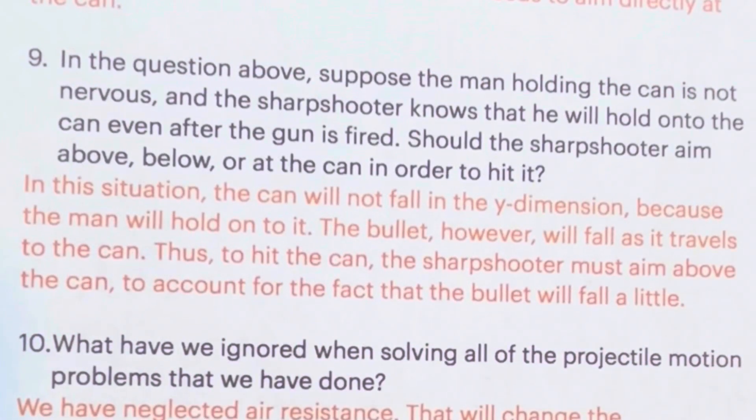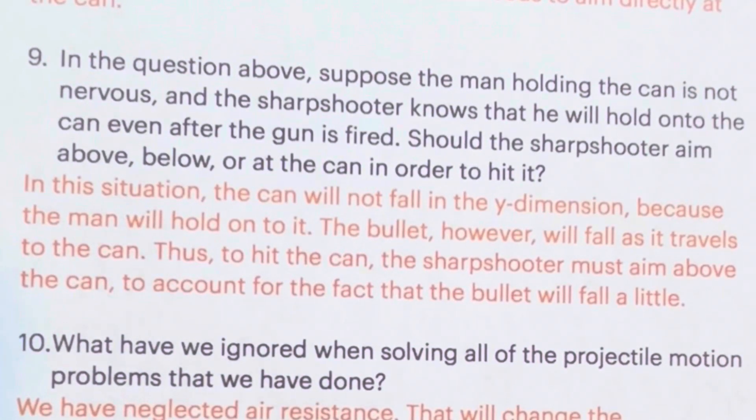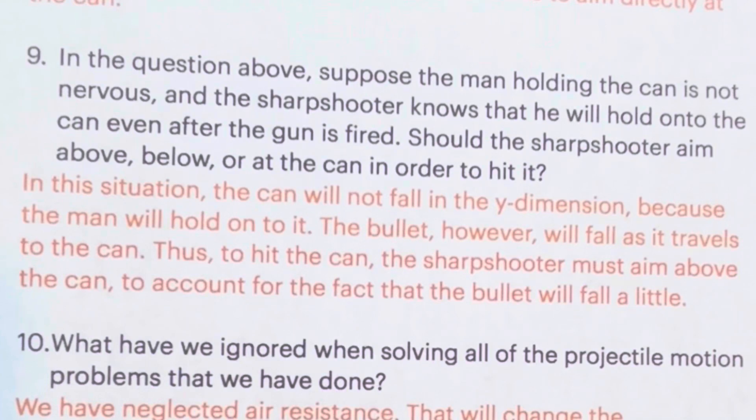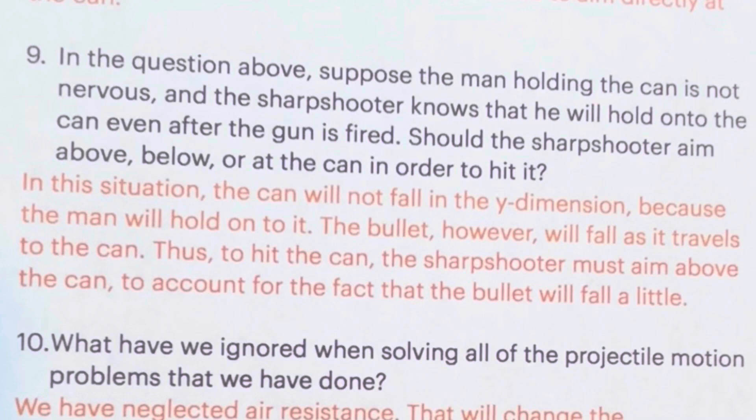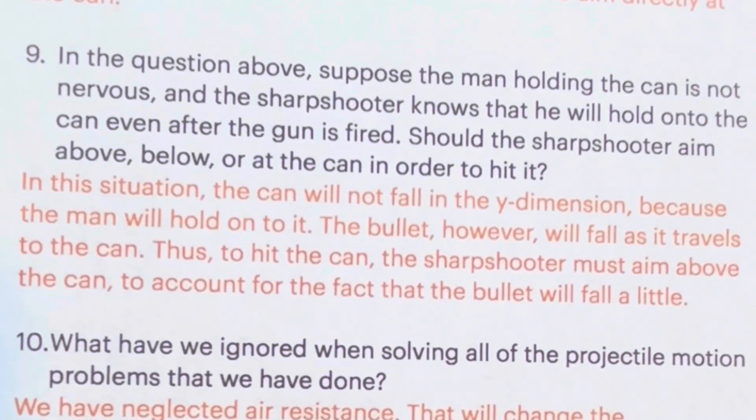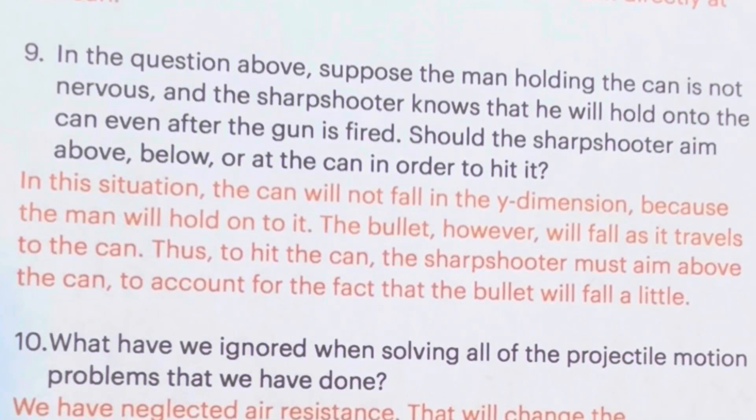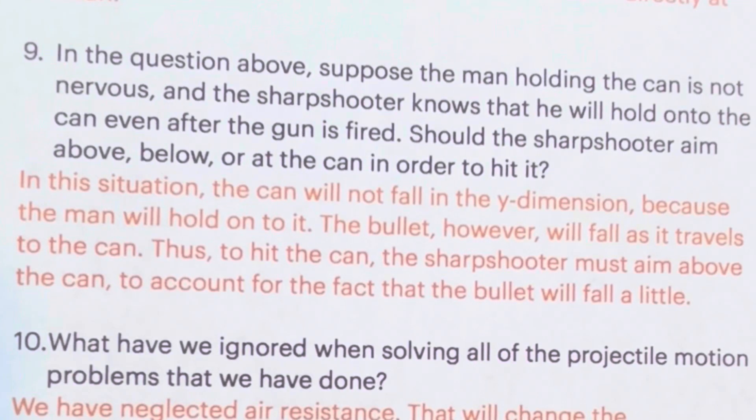In the question above, suppose the man holding the can is not nervous, and the sharpshooter knows that he will hold on to the can even after the gun is fired. Should the sharpshooter aim above, below, or at the can in order to hit it? In this situation, the can will not fall in the Y dimension because the man is going to just hold on to it. The bullet, however, is still going to fall as it travels to the can. Thus, to hit the can, the sharpshooter must aim above the can to account for the fact that the bullet is going to fall a little bit.